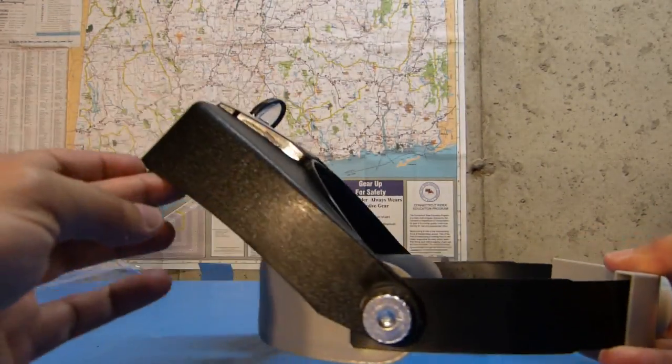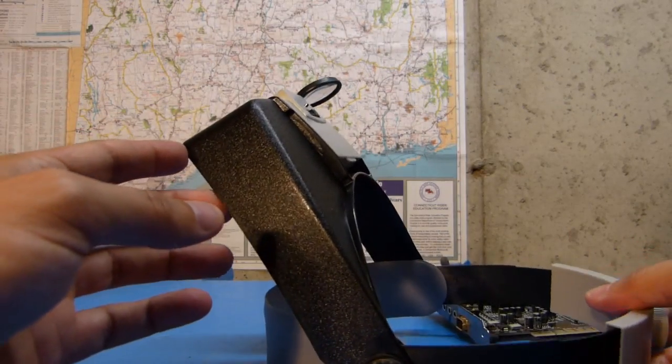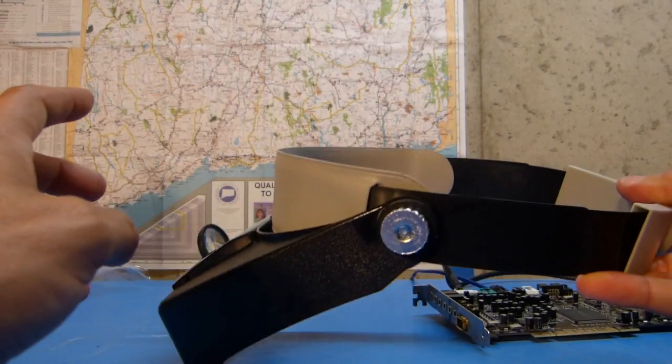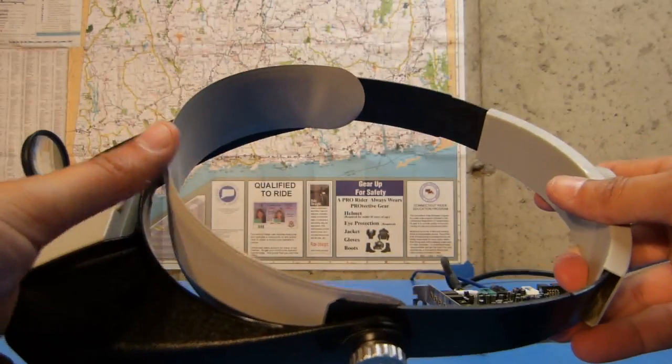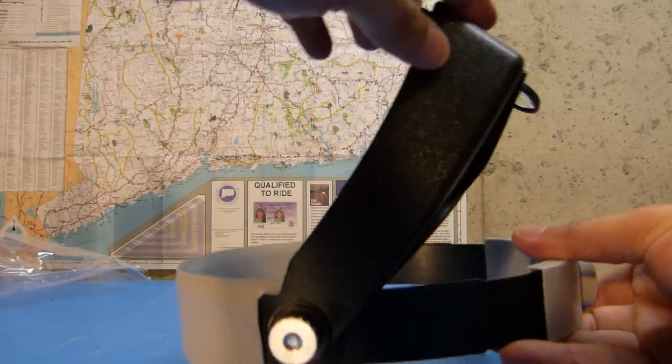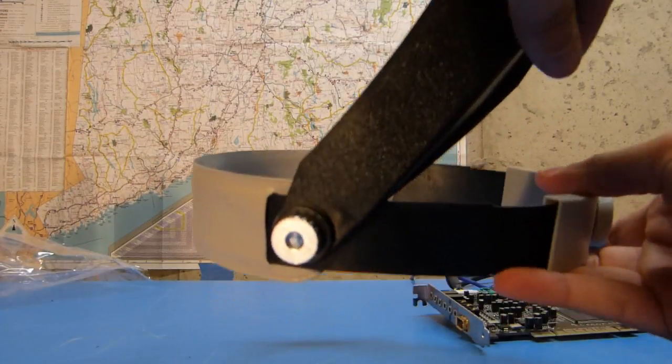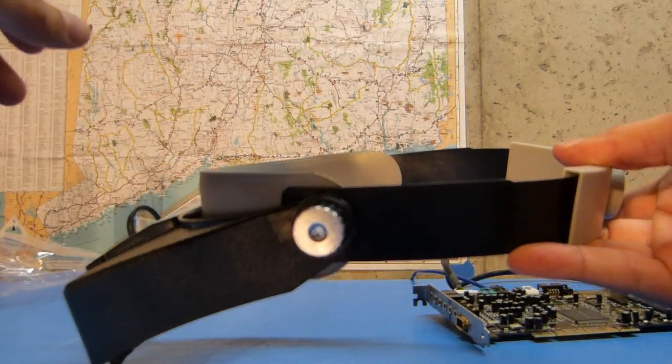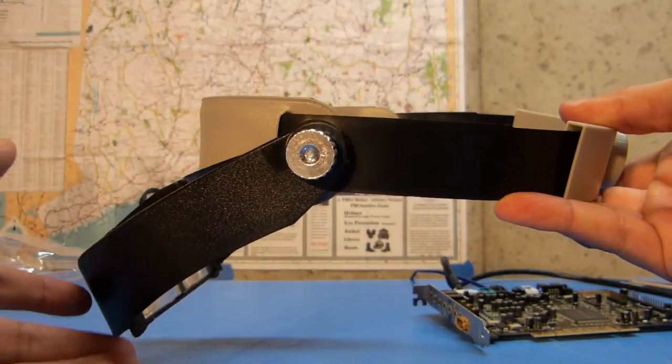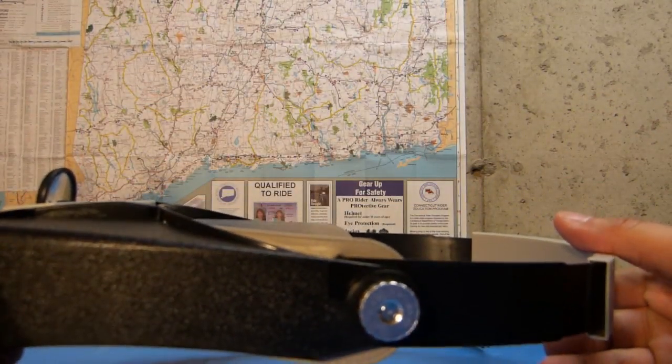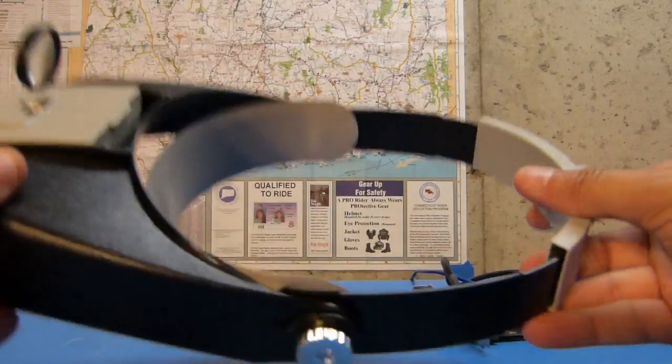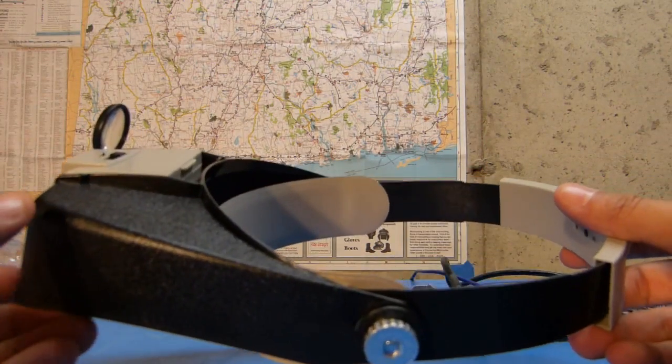So you can't keep it at a 45 degree angle or anything like that, because as you move your head, as you can see, it's going to want to just come back down on you. So if you're going to flip it up, you've got to flip it all the way up and keep it up. You can't just keep it in kind of a half position, as you can see there. So again, not totally unexpected, but it would have been nice if that would have locked in a little better.